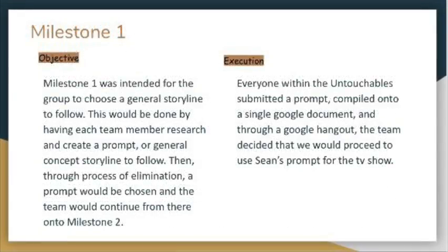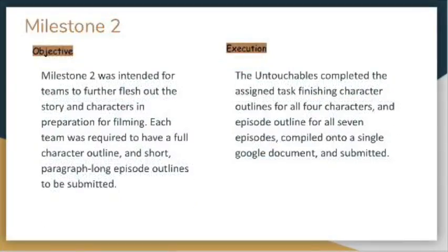In Milestone 1, everyone within the Untouchables submitted a prompt compiled into a single Google document, and through a Google Hangout, the team decided to proceed with Sean's prompt. The Untouchables then completed the assigned task, finishing character outlines for all four characters and episode outlines for all seven episodes, compiled into a single Google document and submitted.